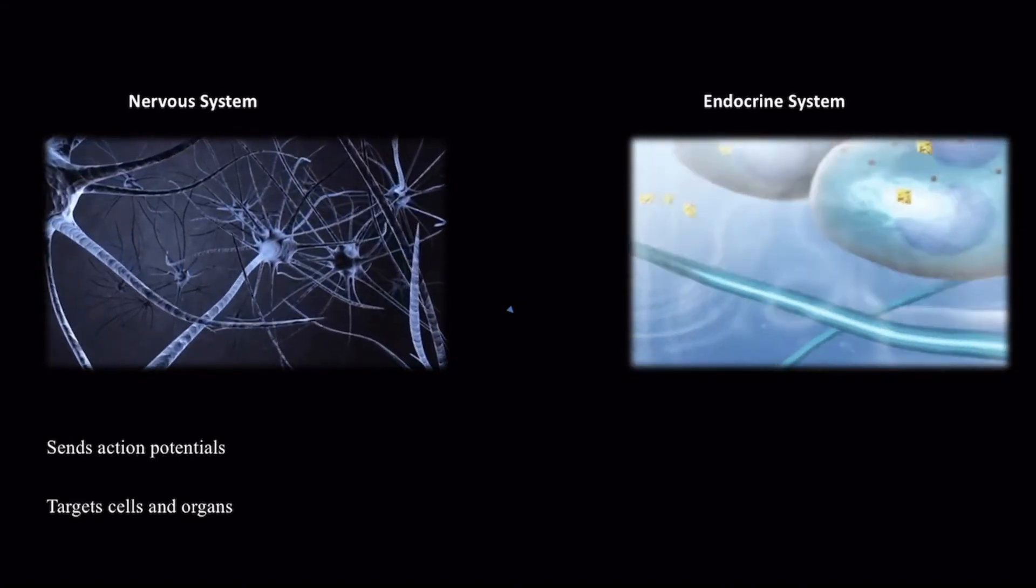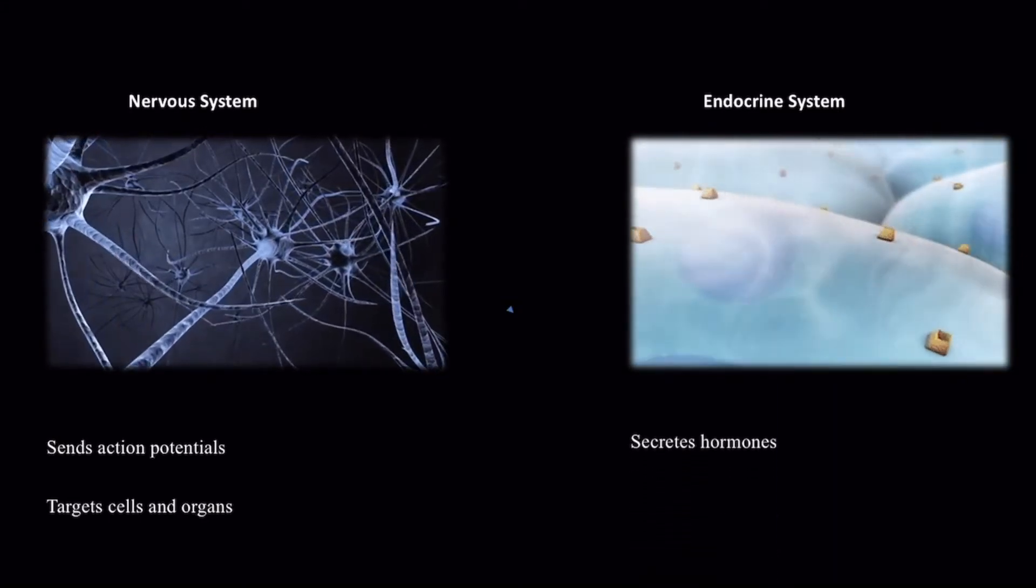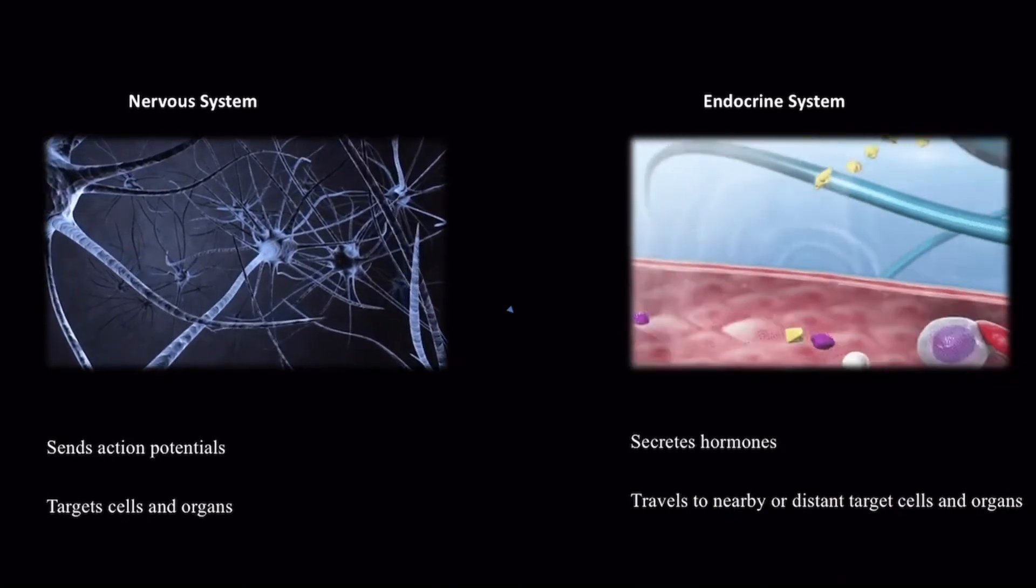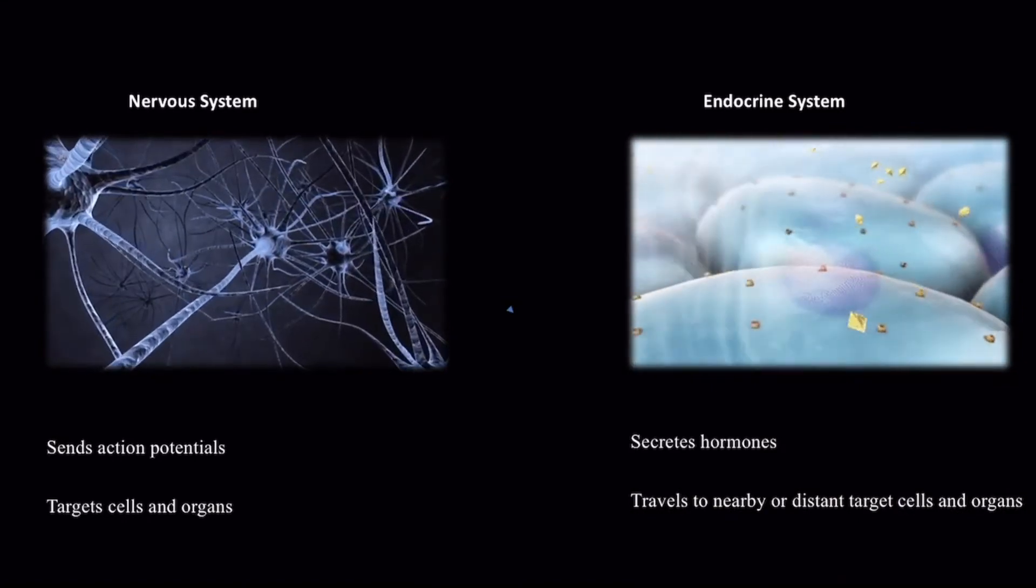The endocrine system secretes chemical signals called hormones into the bloodstream which then travel to nearby or distant target cells and organs. The results are long lasting widespread effects.